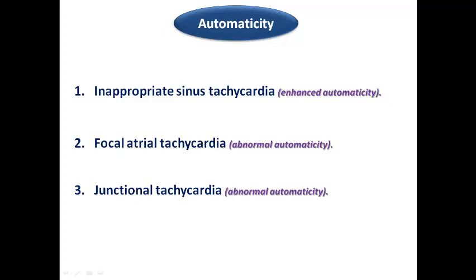We also have focal atrial tachycardia, which is the most common type of atrial tachycardia and is caused by abnormal automaticity in the atrium itself. We have junctional tachycardia, caused by abnormal automaticity in the AV node, leading to a type of junctional tachycardia, which is not very common to see.